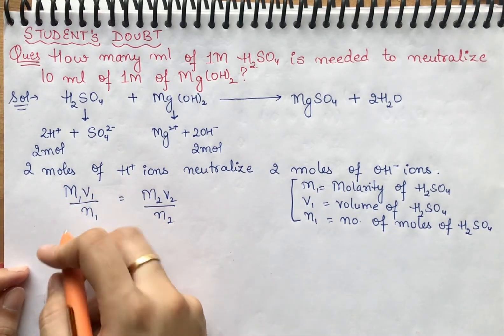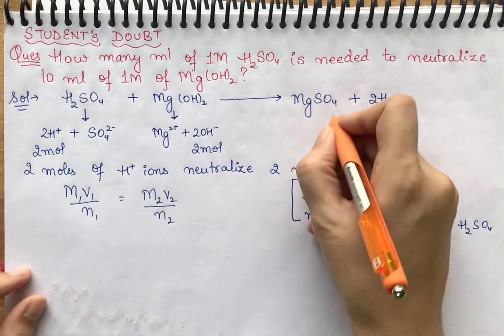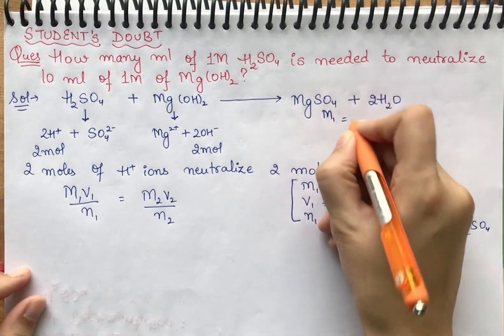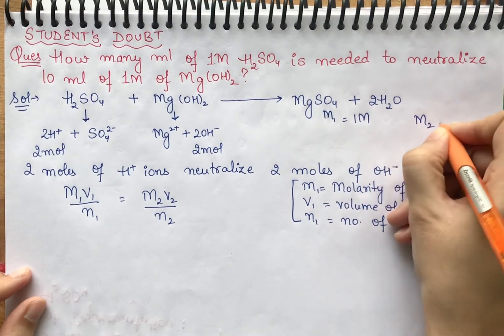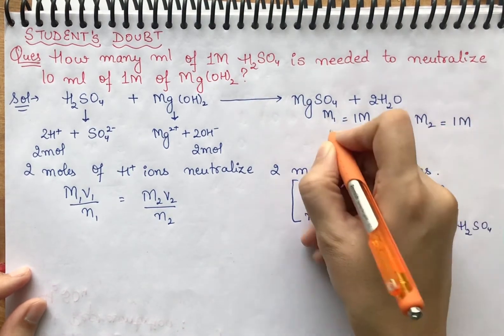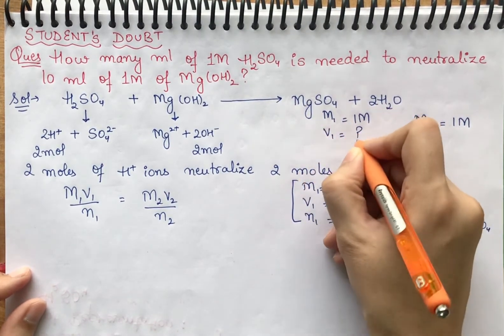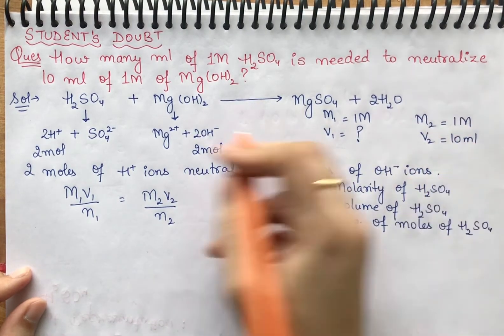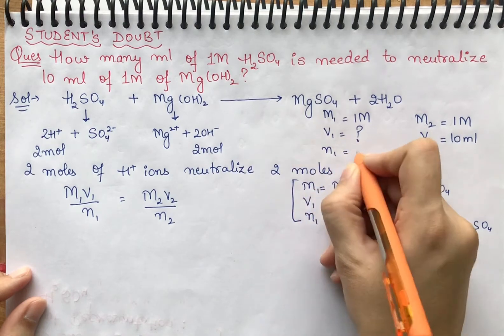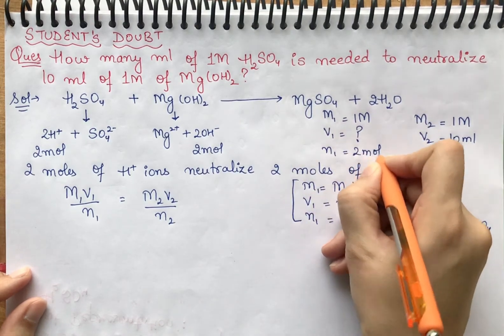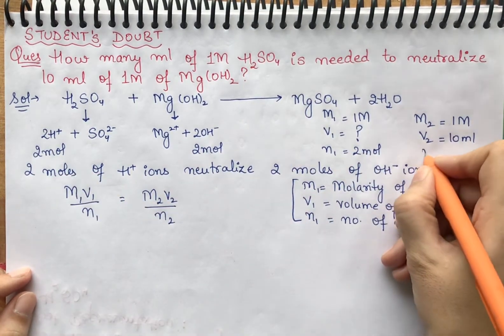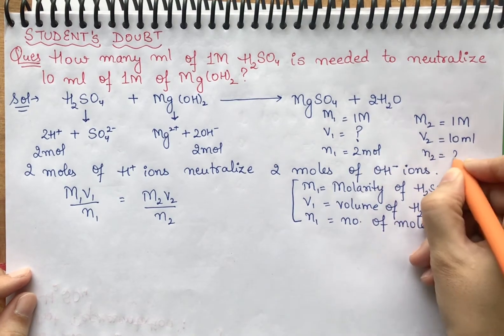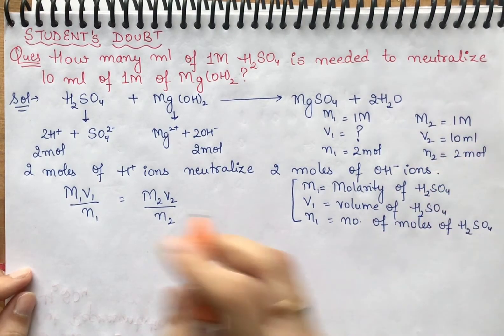Let's put the values. M1 is 1 molar and M2 is also 1 molar. V1 we have to find out, V2 is 10 ml. N1 is 2 moles of H+ ions and N2 is also 2 moles of OH- ions.